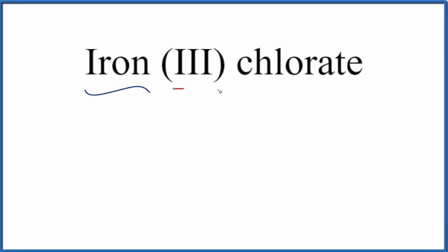To write the formula for iron (III) chlorate, let's first write the element symbol for iron. That's just Fe. And this Roman numeral III here, that tells us we have 3+ for the iron.